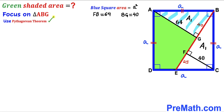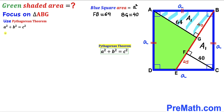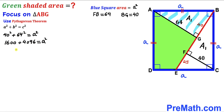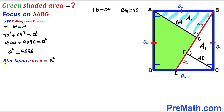We apply the Pythagorean theorem to right triangle ABG. The hypotenuse is the side length a, and the two legs are 40 and 64. So: 40² + 64² = a². That gives us 1600 + 4096 = a², so a² = 5696. Since the blue square area equals a², the blue square area is 5696 square units.